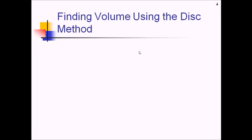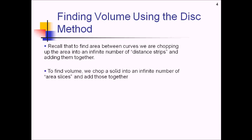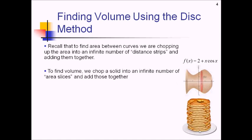Let's talk about how we might go about finding volume using something called the disk method. Recall that to find area between curves, we chopped up the area into an infinite number of little distance strips and added all those distances together to get an area. Well, when you're finding volume, we're going to chop up a solid into an infinite number of area slices and add those together to get the volume. You could think of a solid as just a stack of pancakes — chopped into infinitely thin pancakes — and adding all those together to get the whole solid.